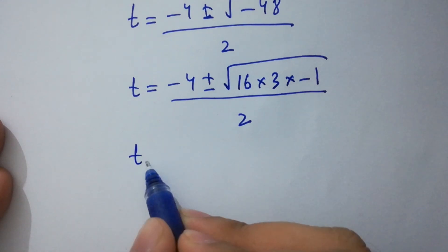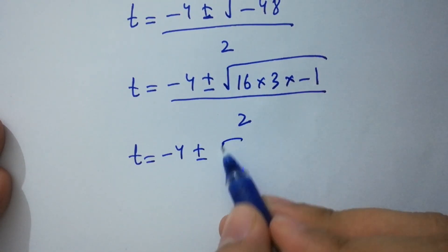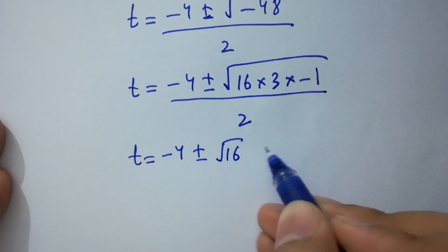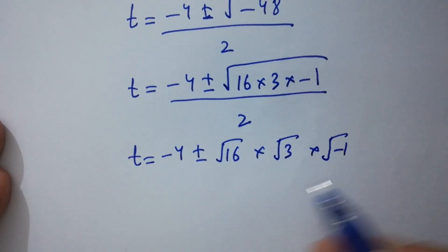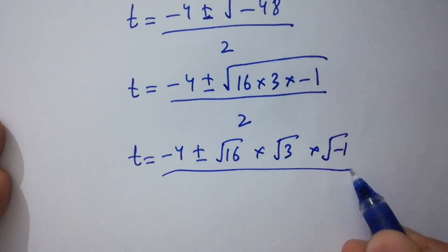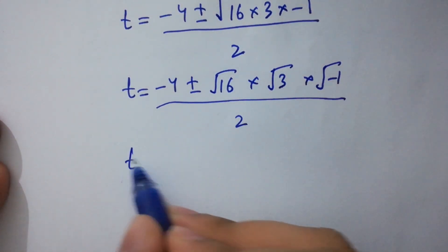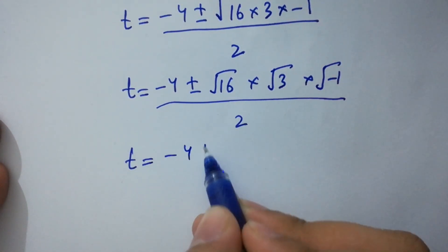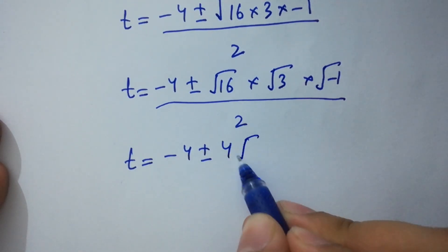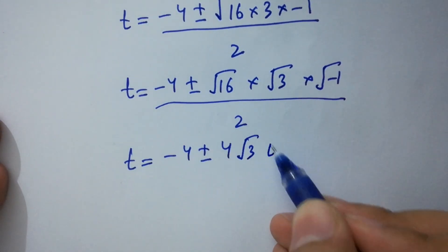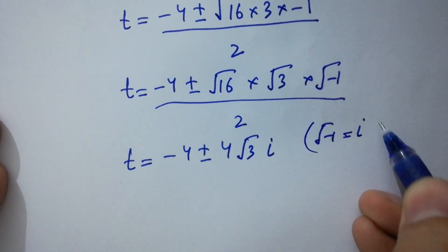So we have t equals minus 4 plus or minus square root of 16, times square root of 3, times square root of minus 1, all over 2. The square root of 16 is 4, and the square root of minus 1 is i from complex numbers.